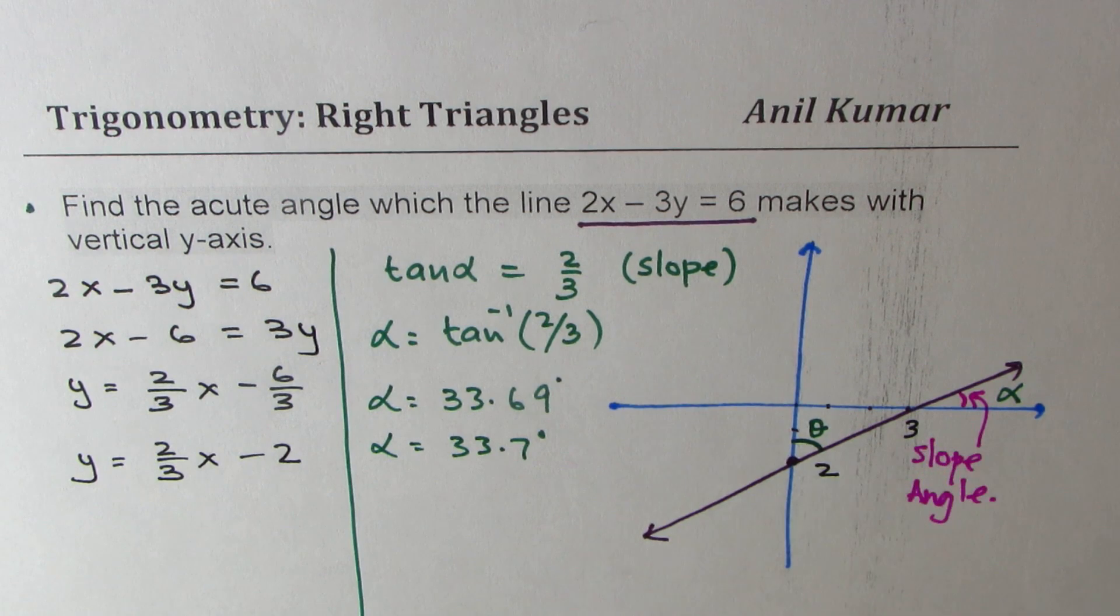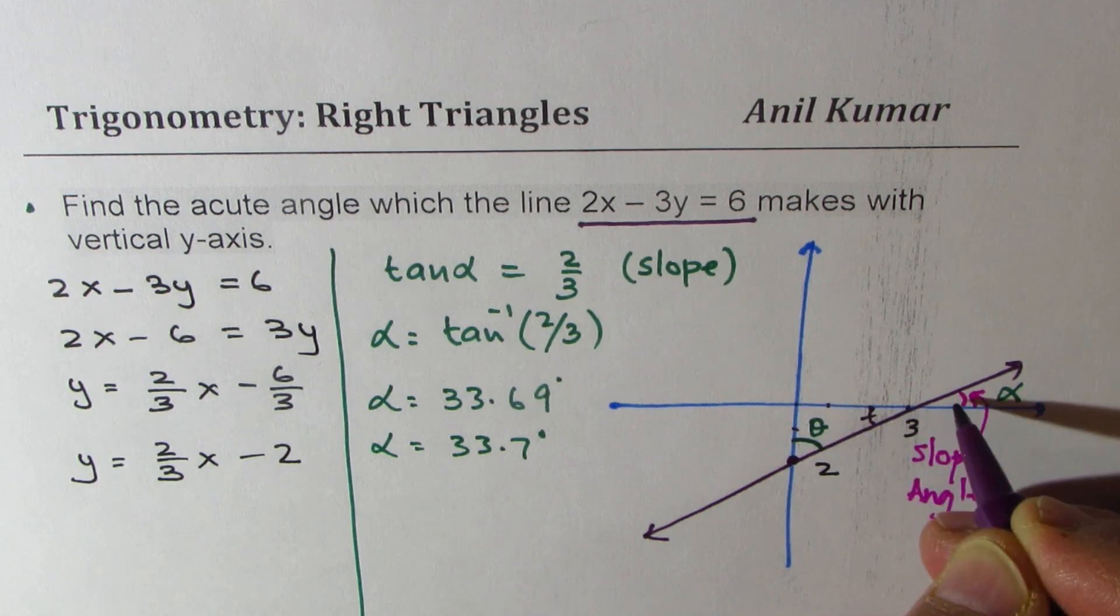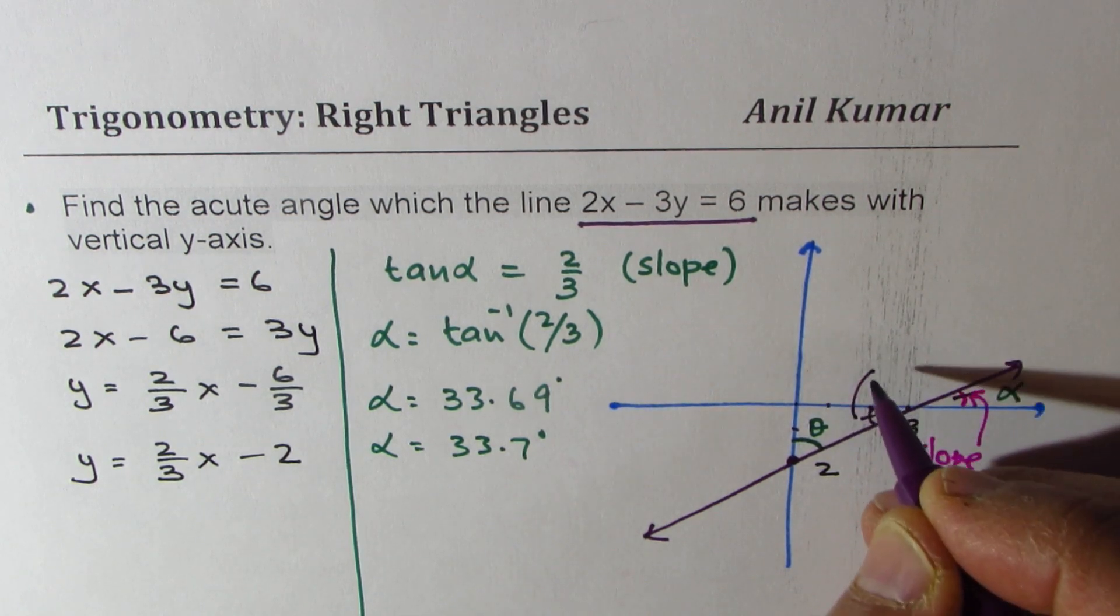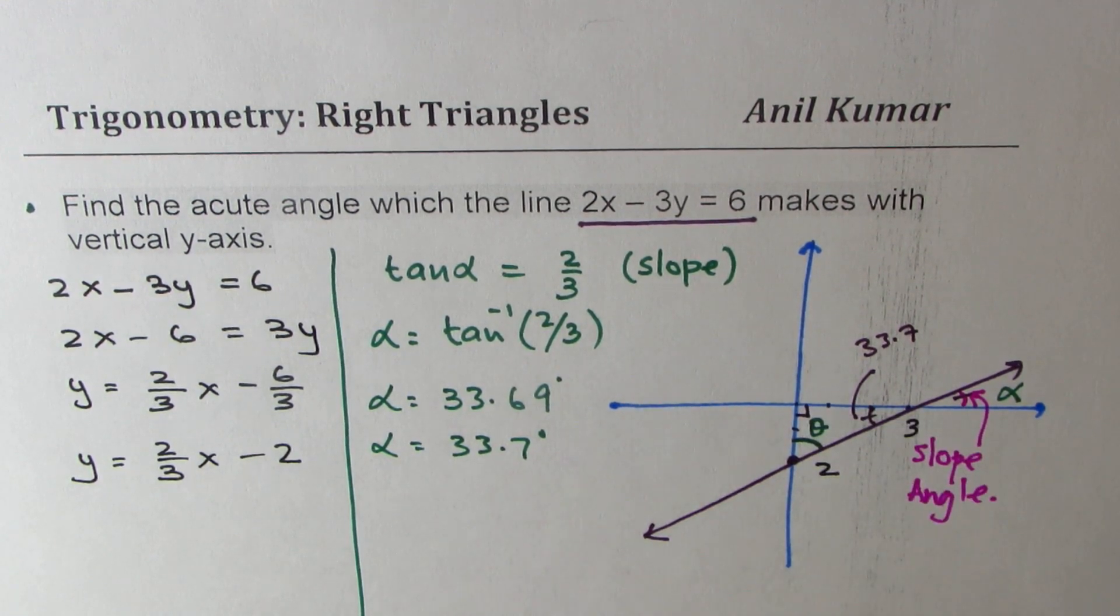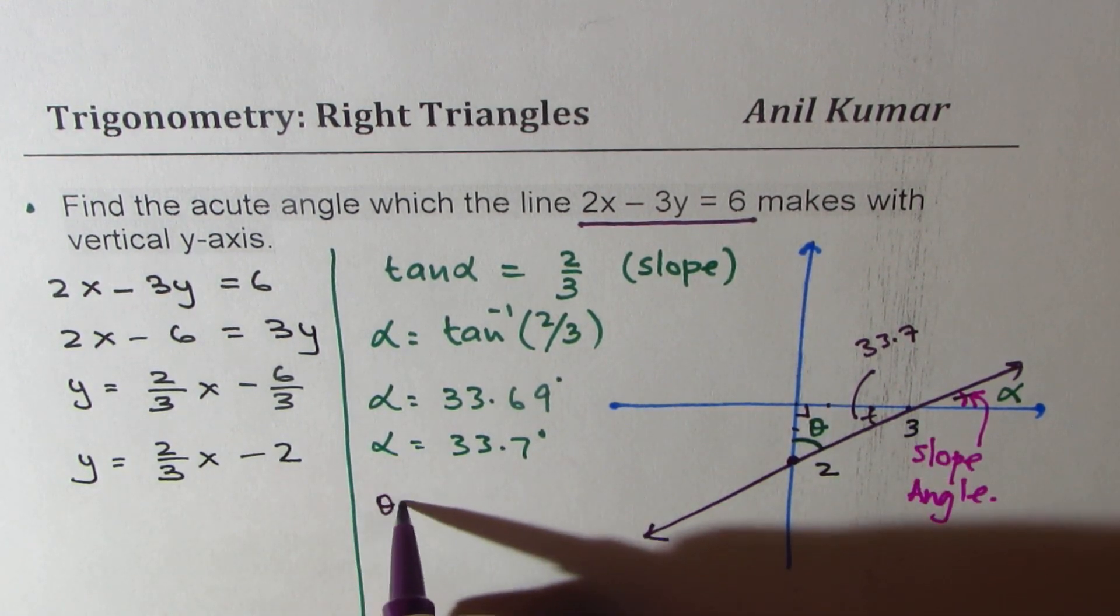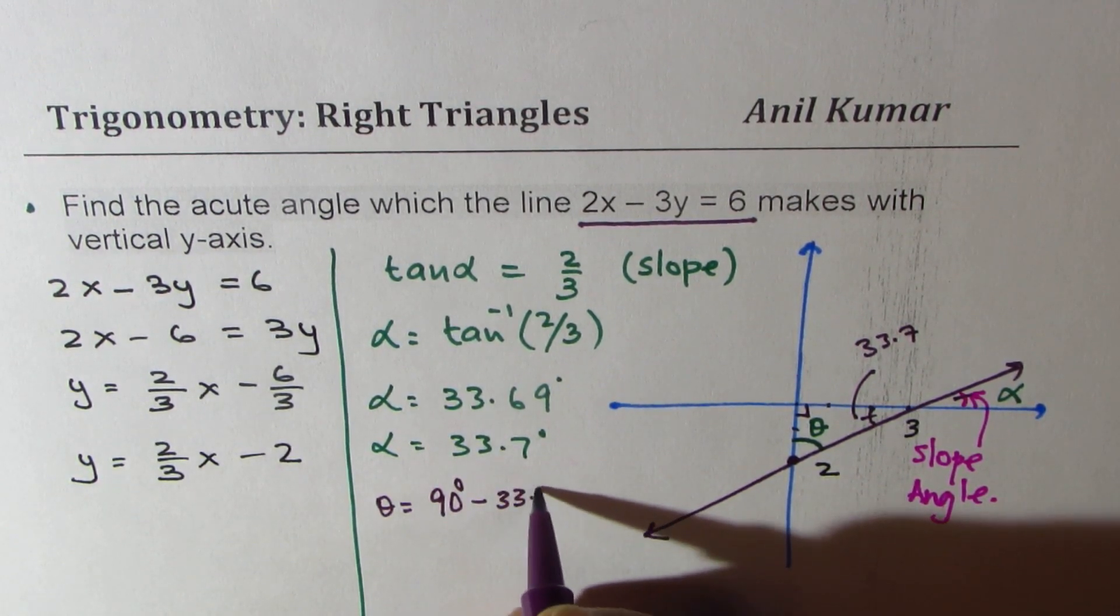Now you need to find theta. How do we find that? So clearly this is also equal to alpha. These two angles are equal. So this angle is also 33.7. Now since we have a right angle we can always say theta is equals to 90 degrees minus 33.7.